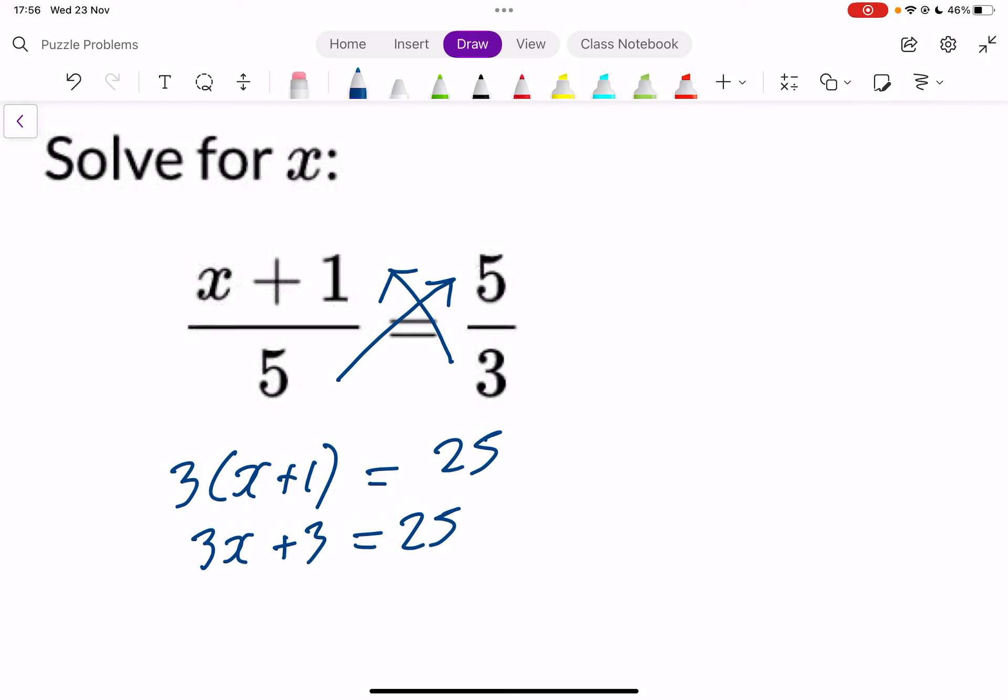So you're now into a two-step linear equation. You've got 3 multiplying your x, and then you're adding 3. So the first thing you do is bring that 3 across, and that takes away. So you'll have 3x equals 25 minus 3 is 22.